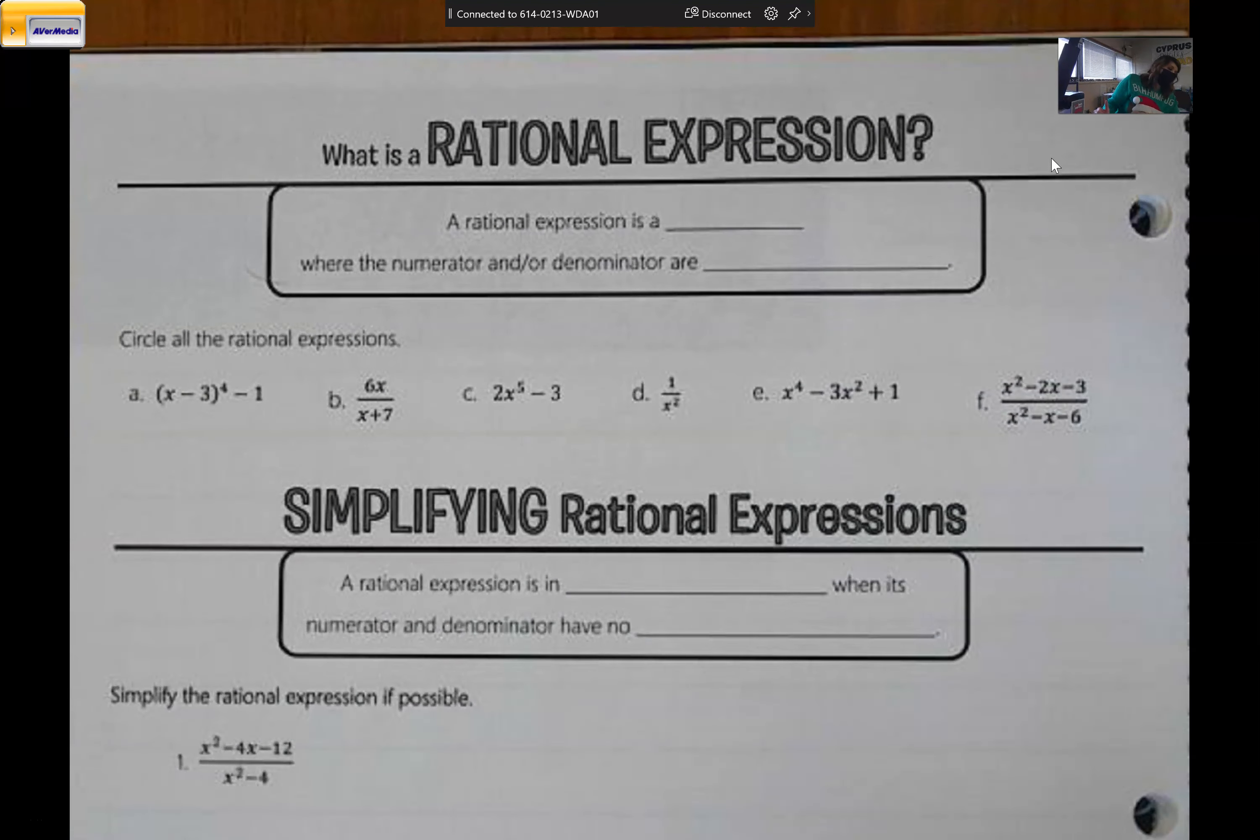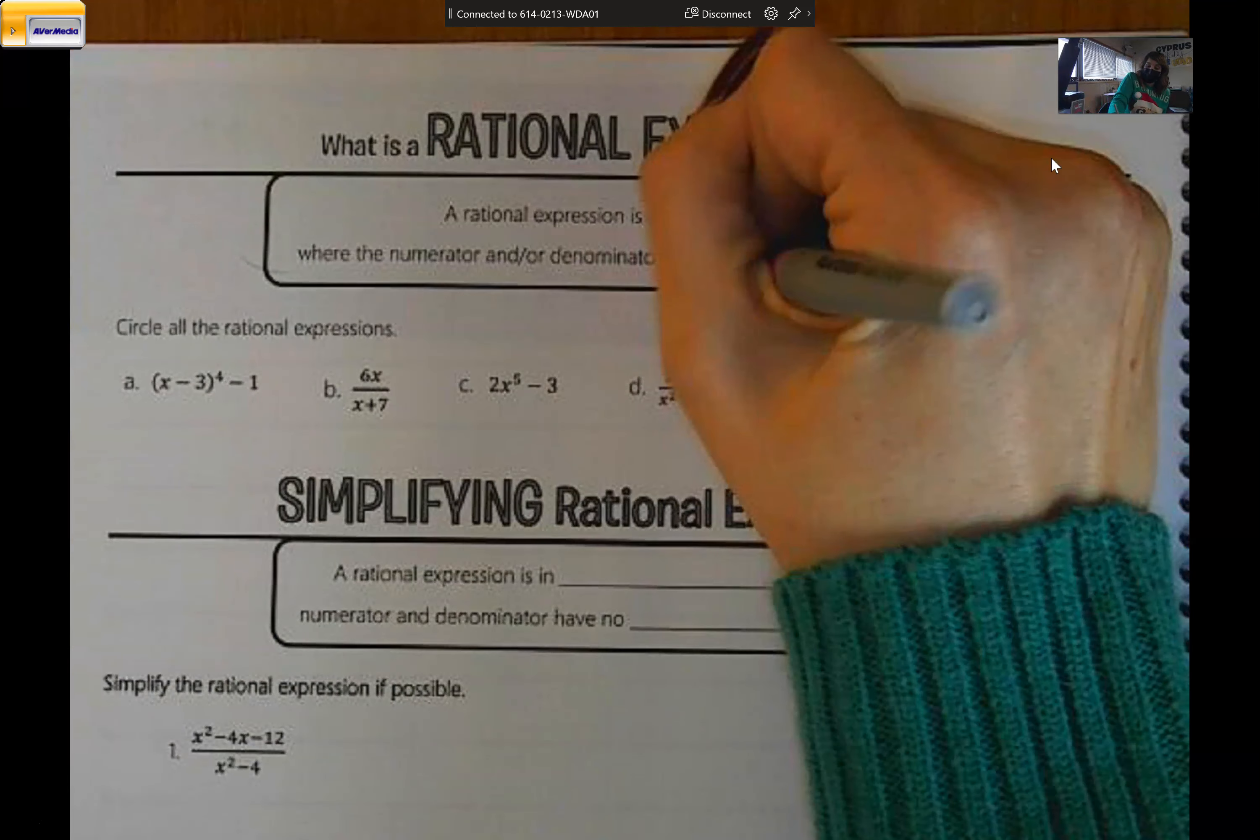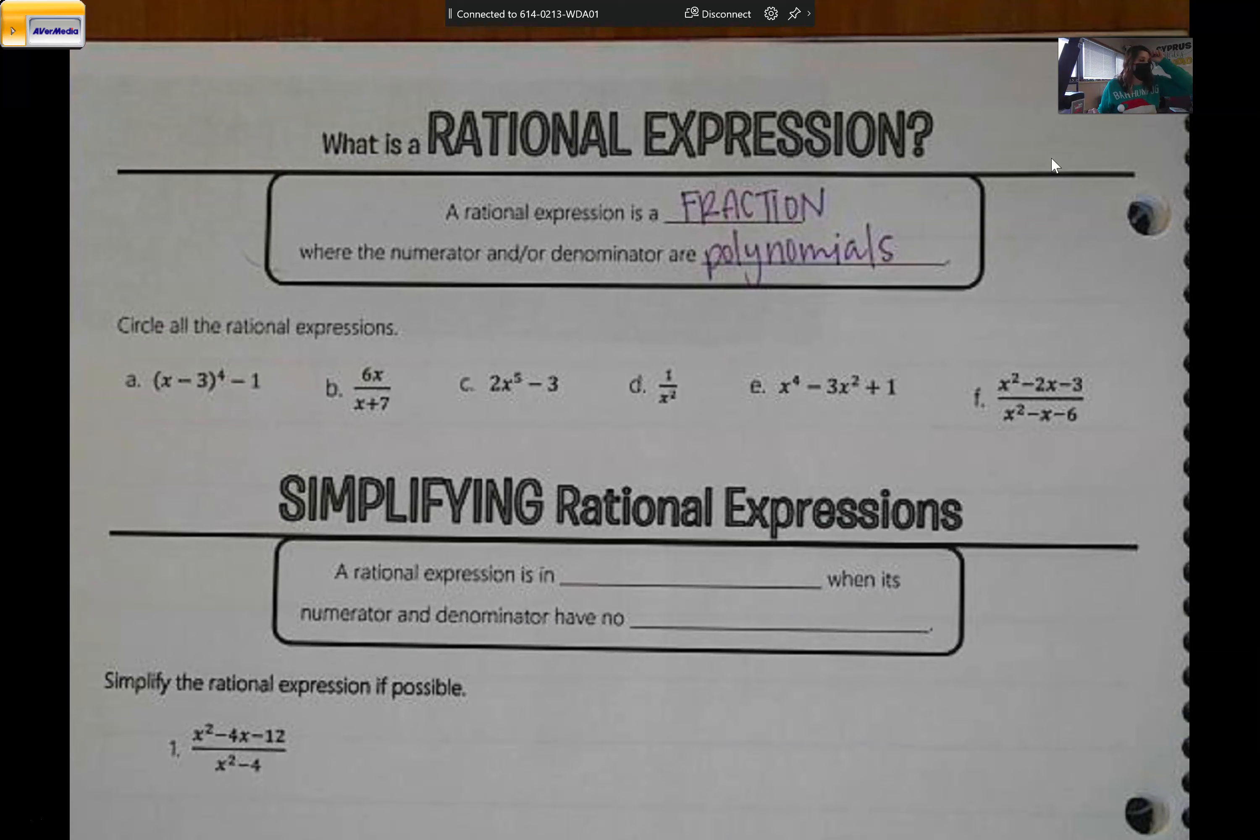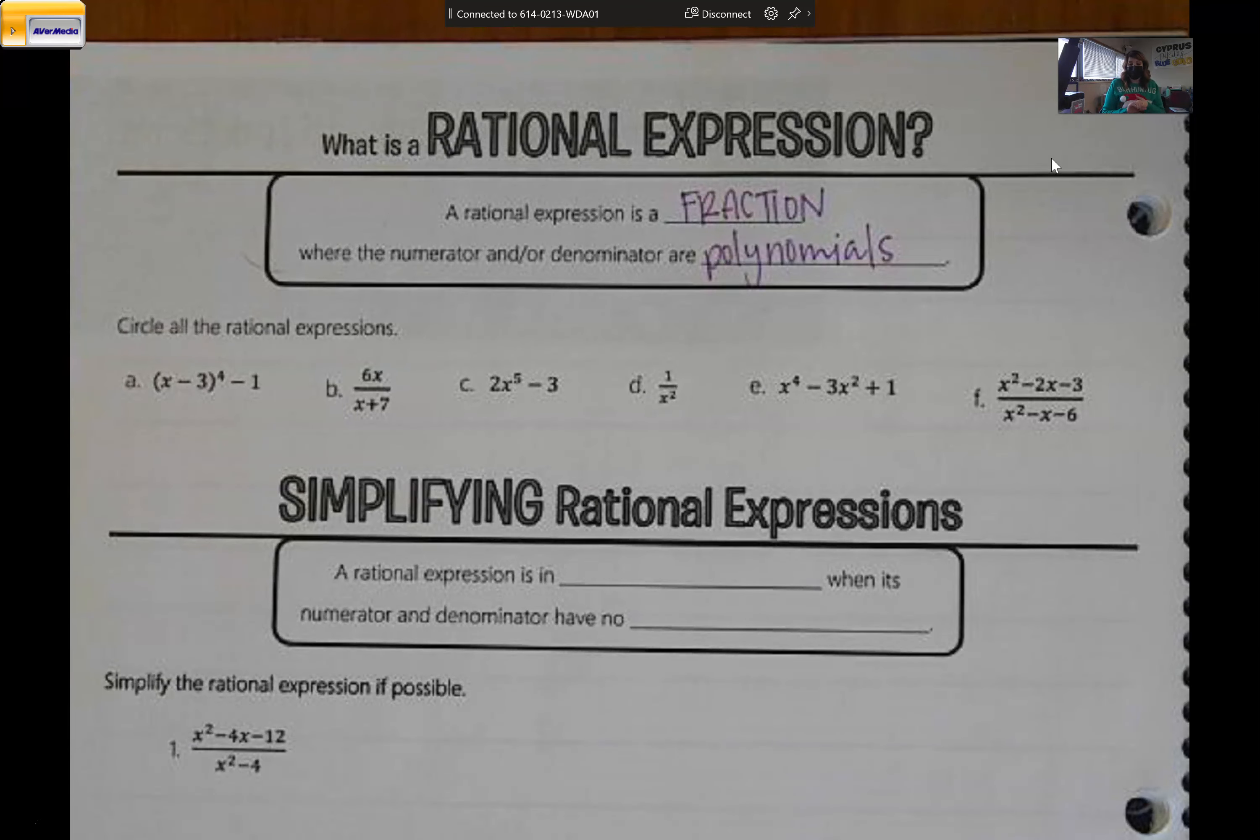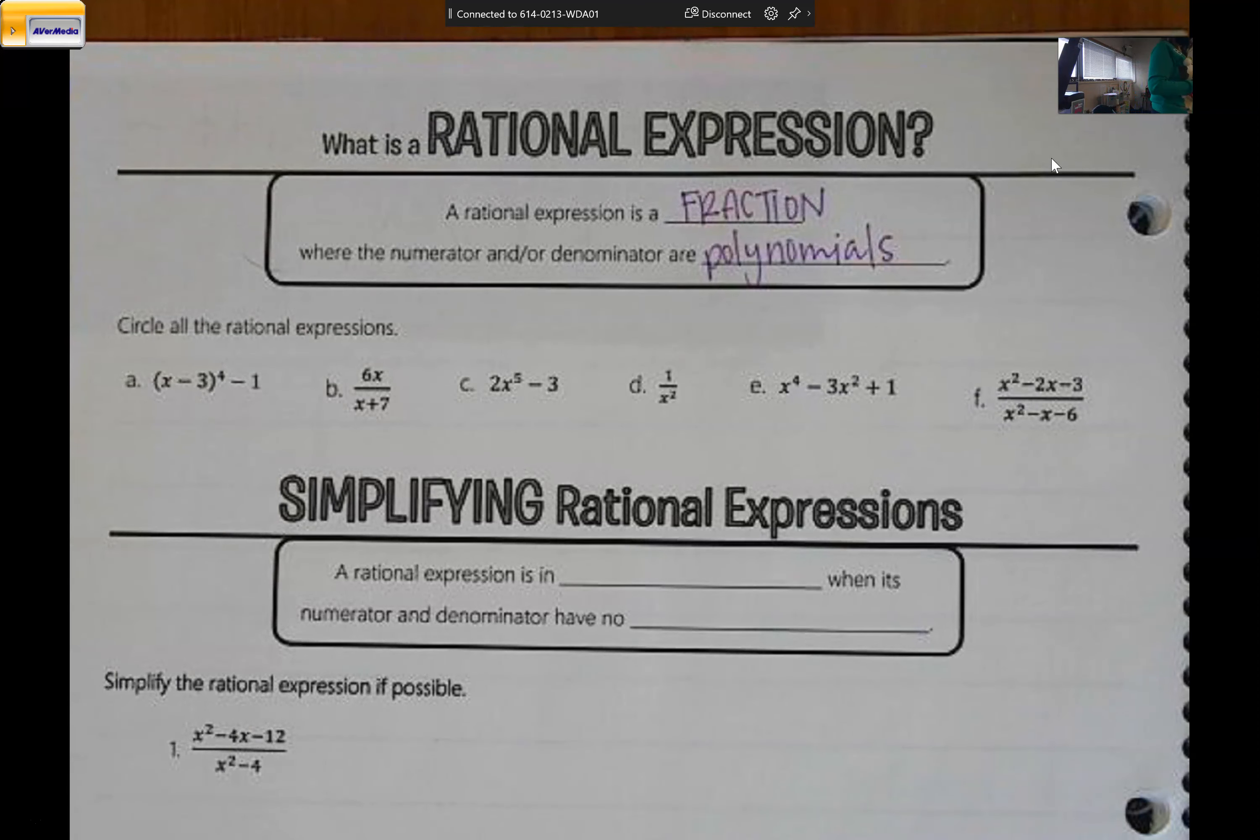A rational expression is a fraction where the numerator and/or denominator are polynomials, meaning they have like an x plus and minus, or an x squared plus five minus two. It has to be a fraction and the top or the bottom has to basically have an x in it. So now that you know that, circle all of the ones that you think are rational expressions. Remember it has to be a fraction and a polynomial in the numerator and/or denominator.